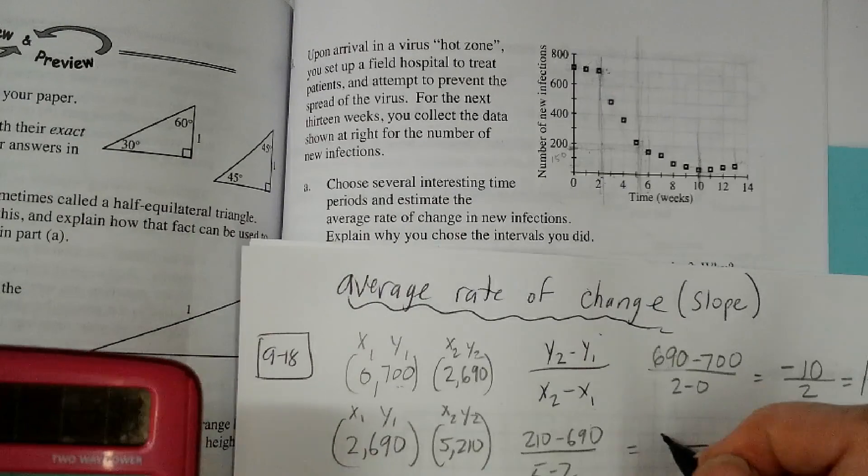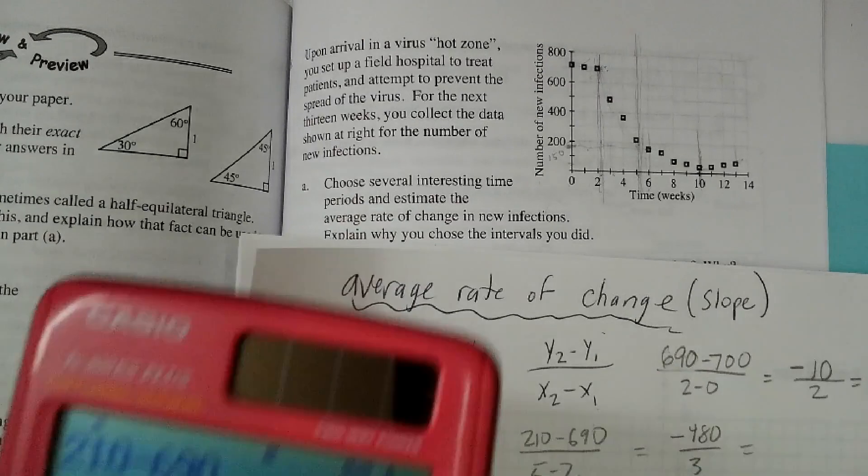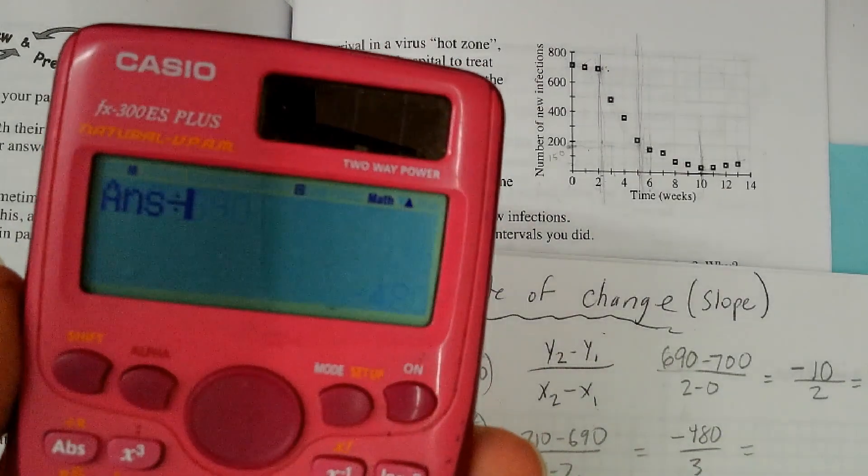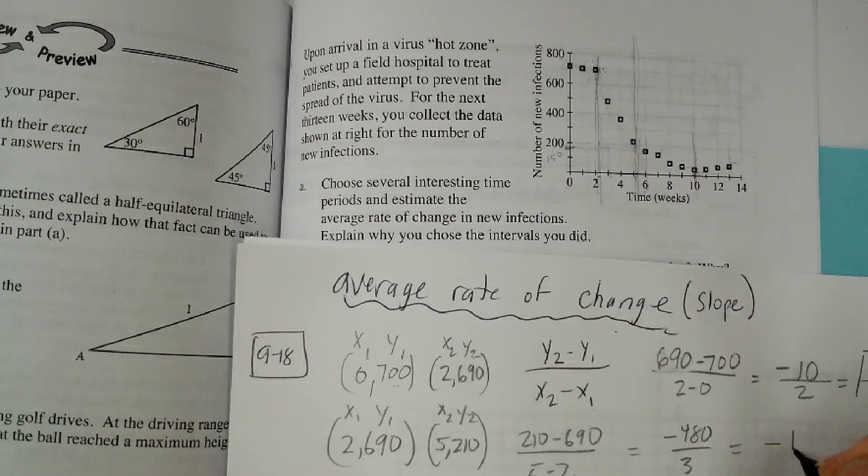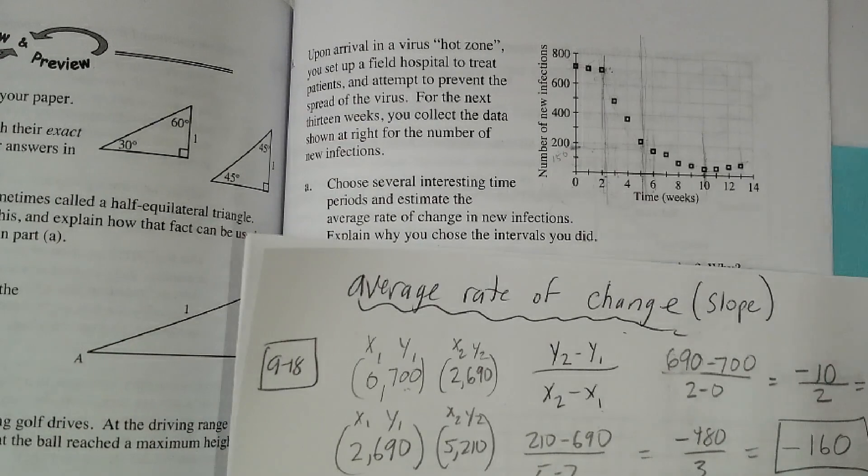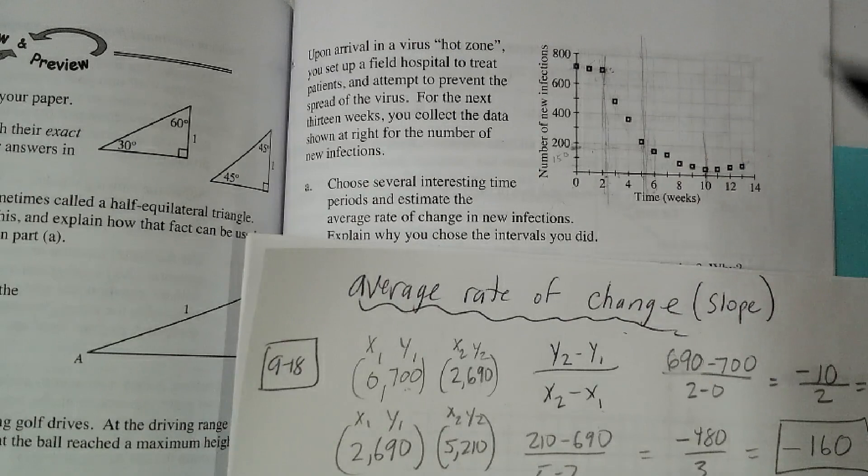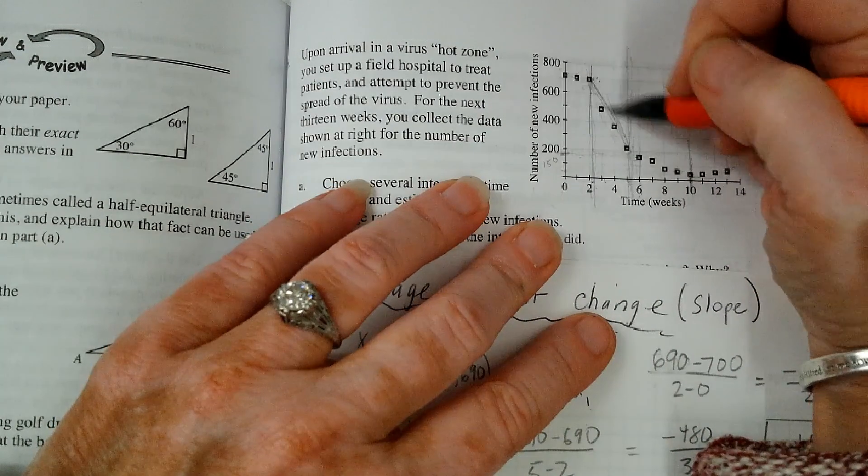That's negative 480. Divide it by 3. That's about negative 160 cases. So now it's dropping a lot faster. Basically I'm getting the slope of the line that connects these two right here.